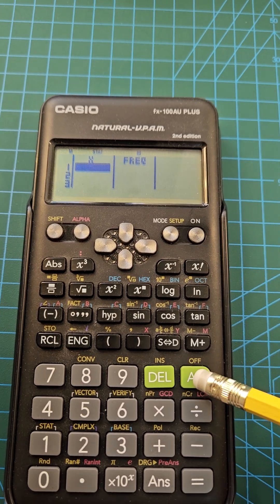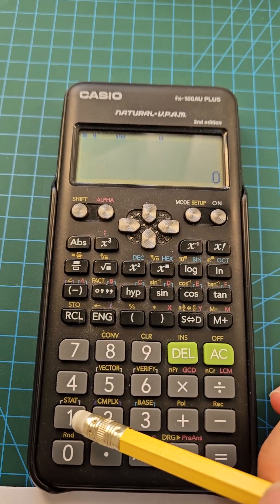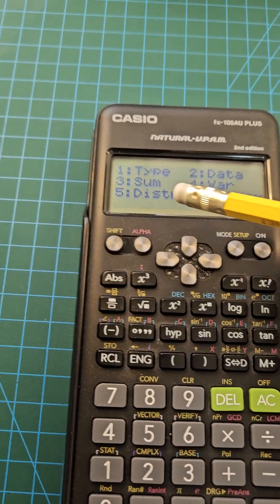Now clear the screen by pressing AC, then press shift and then number one, and then option five distribution.